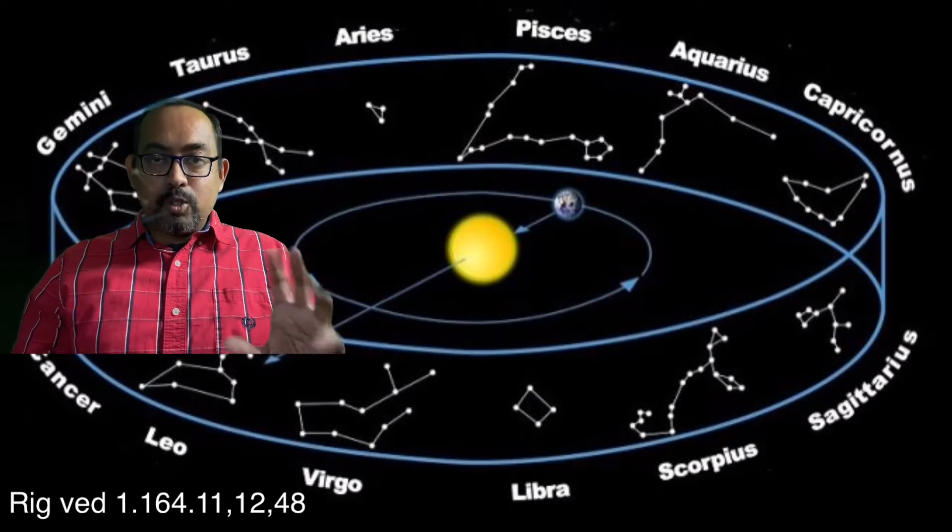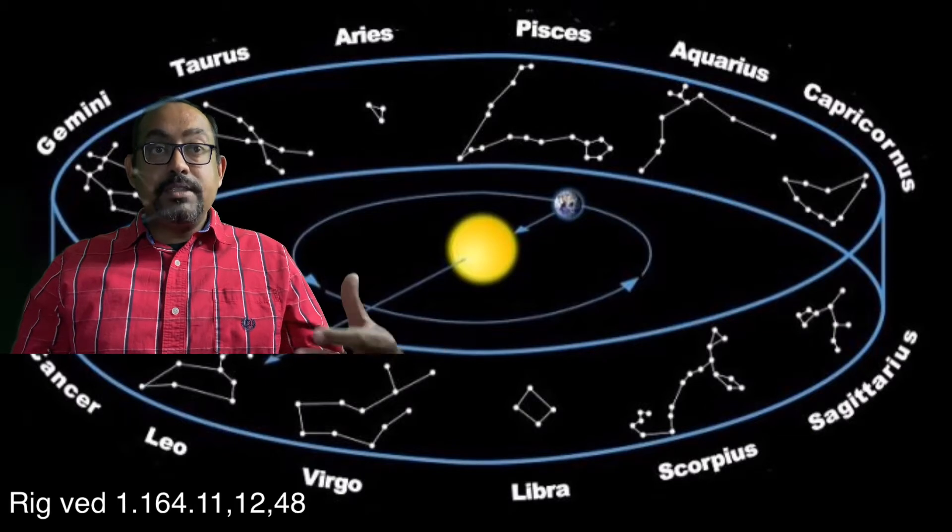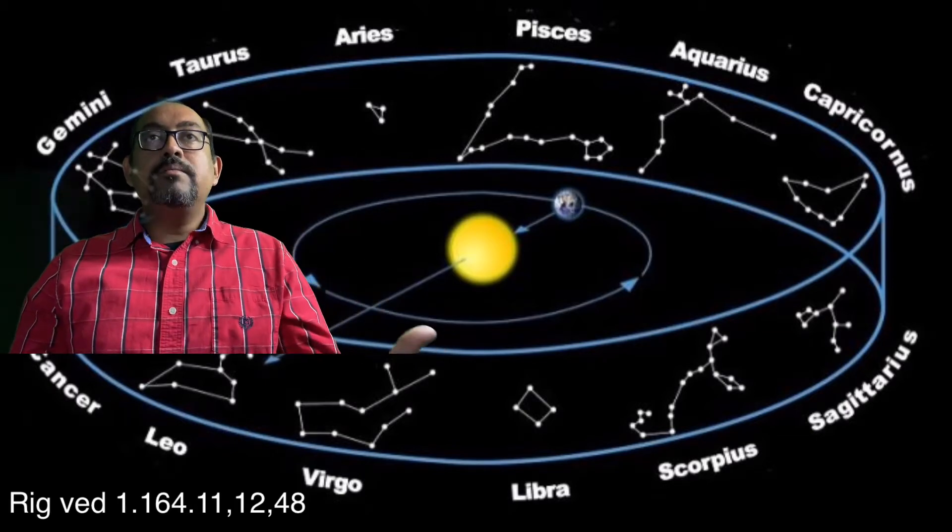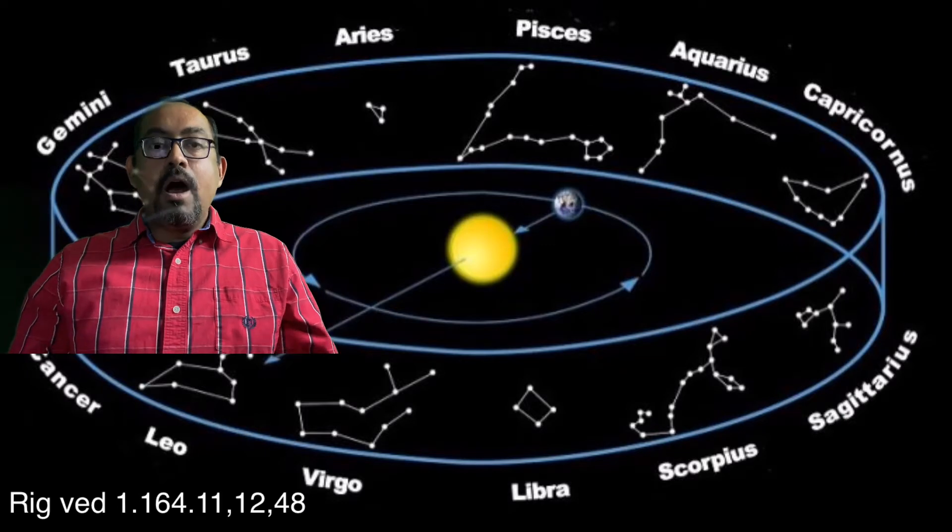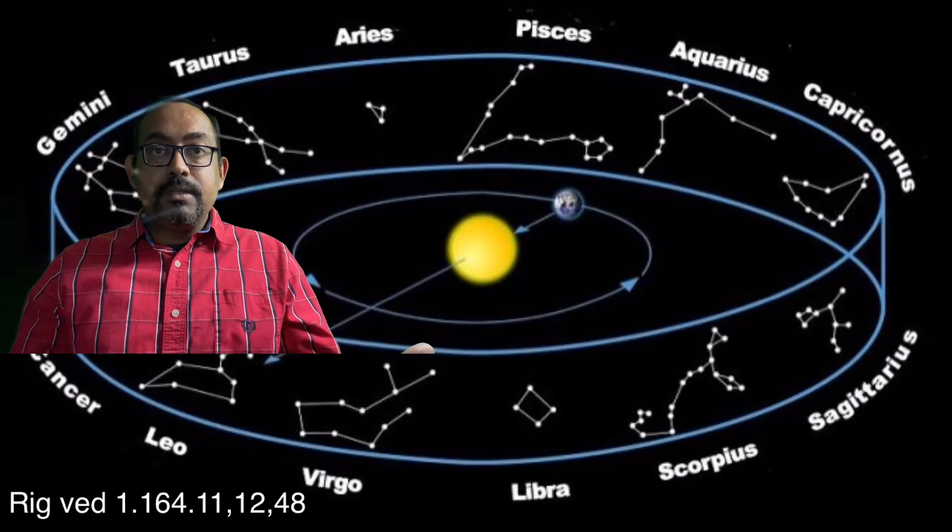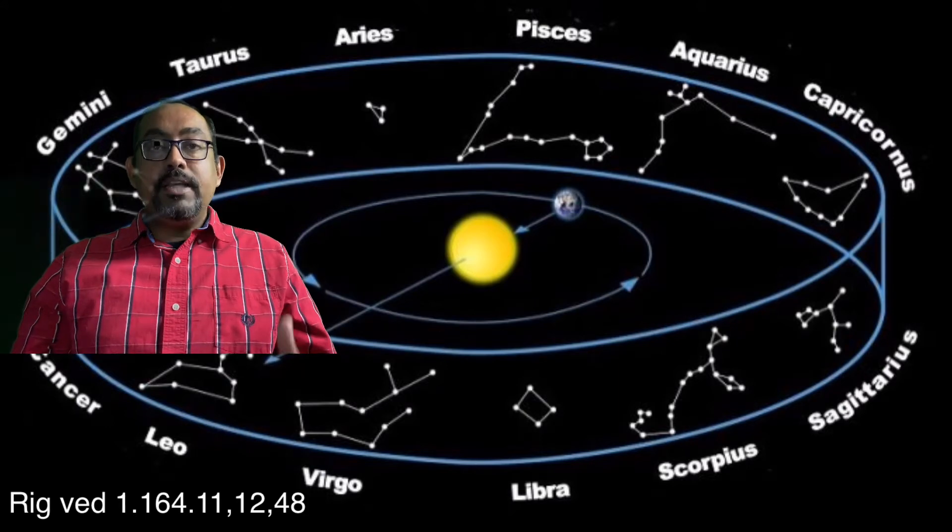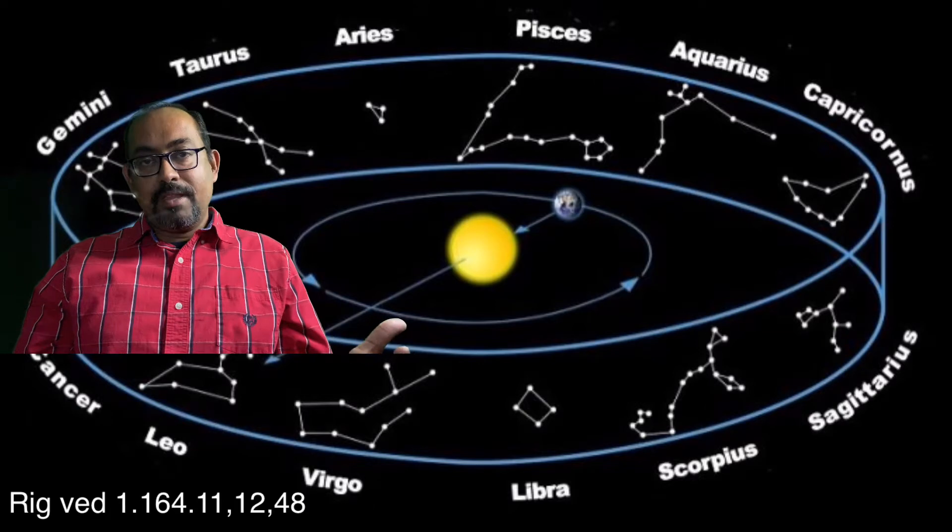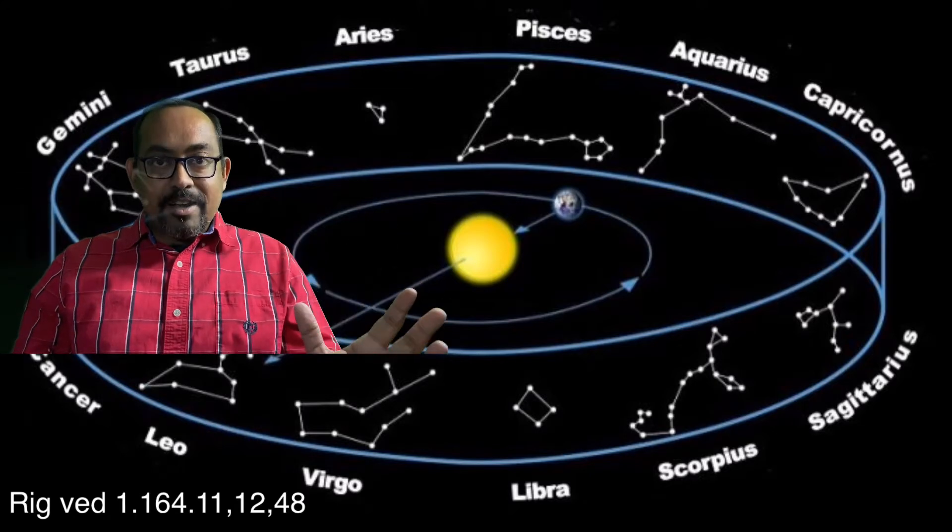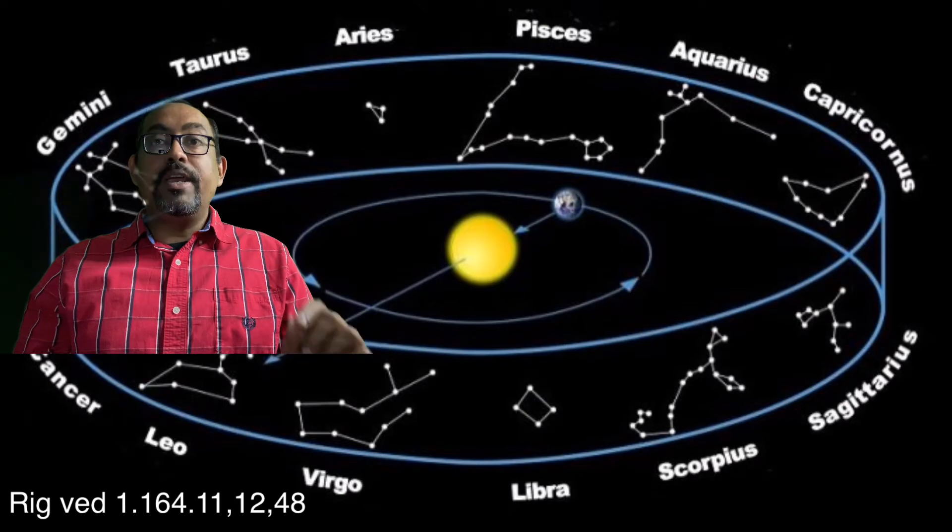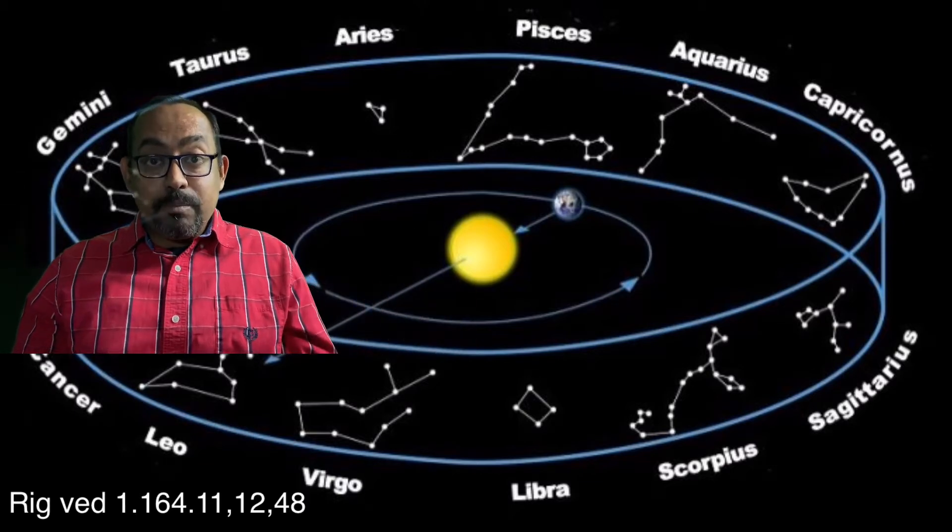Rig Veda mantra 1.164.11 - in this mantra the literal meaning is there is a wheel of law with 12 spokes which goes round and round. It is not intended to be decayed. Here there is Agni in this mantra and the mention is of 720 suns in pair. What can be 720 suns? I don't think anyone can have 720 suns.